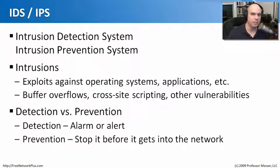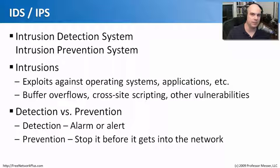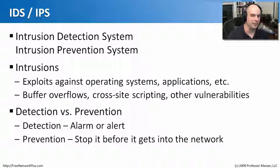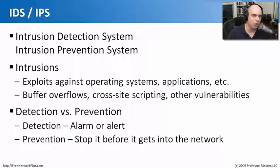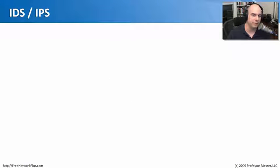IDSs will just alarm — they'll send you an alert if something is happening, but they can't actually stop anything. The latest generation are IPSs, where the P stands for prevention. We are stopping vulnerabilities before they get inside of the network, stopping the buffer overflow and exploits against our operating systems — not only telling you it's happening, but preventing it from even coming in the door. Very useful if you're under attack from a worm.